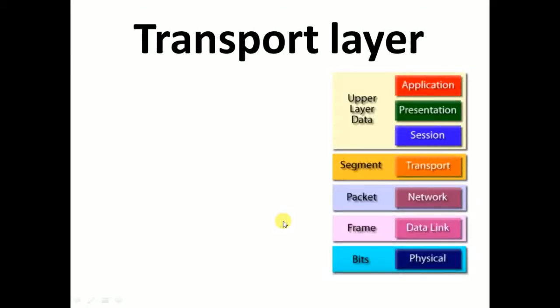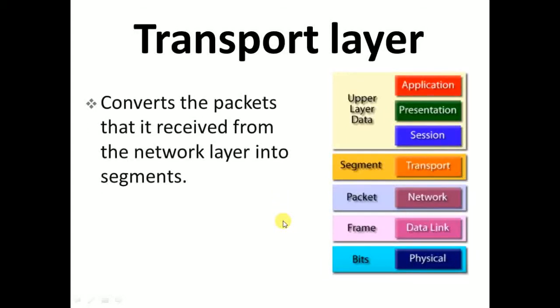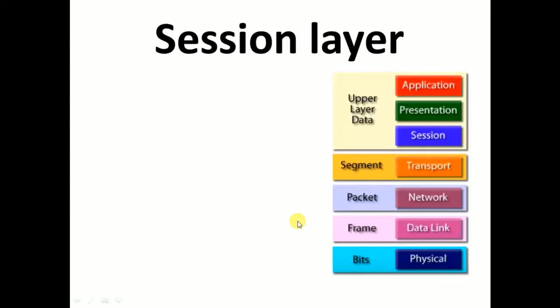After the network layer, the next one is the transport layer. This layer converts the packets received from the network layer into segments. This layer also ensures that data delivered is error-free, in sequence, and no loss, duplications, or corruptions occur.